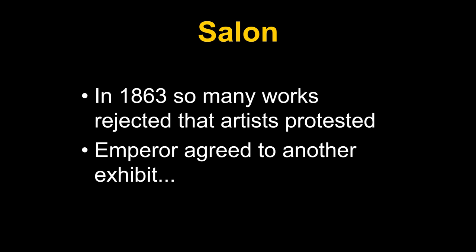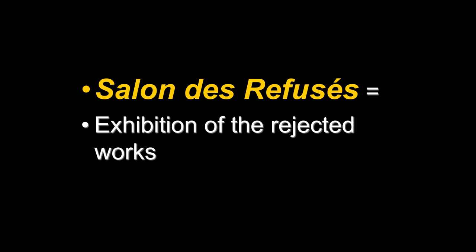Almost every year there was an exhibit known as the Salon. Sometimes there was political unrest — when the Prussians invaded in the early 1870s, of course there was no Salon — but almost every year they would have this big exhibit. In 1863, so many works were rejected that artists protested, and the emperor agreed to give them another exhibit called the Salon des Refusés, or the exhibition of rejected works.